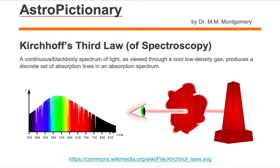Kirchhoff's third law of spectroscopy: a continuous slash black body spectrum of light, as viewed through a cool low density gas, produces a discrete set of absorption lines in an absorption spectrum.